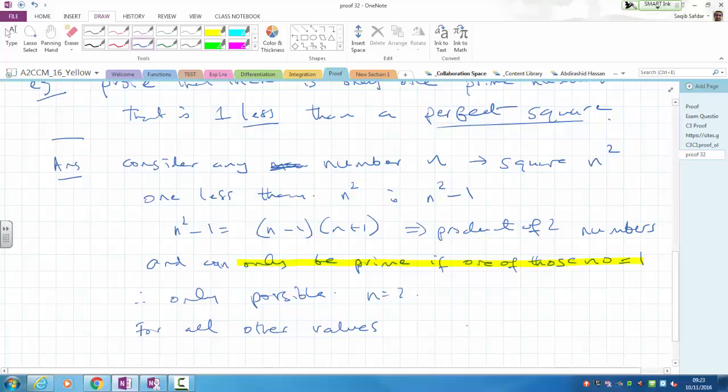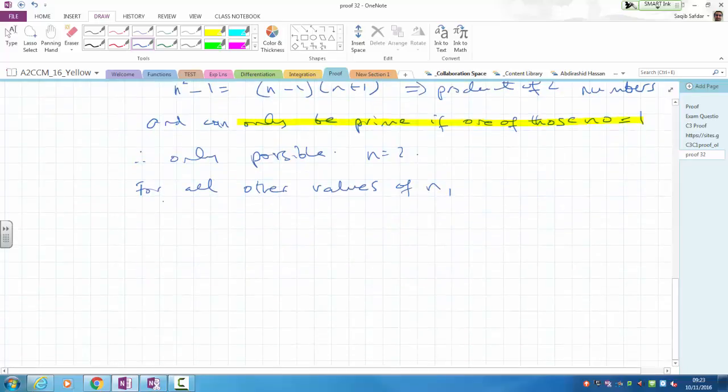So for all other values, it emphasizes that two numbers can only be prime. Because it's a product, there's your closing argument. If it's a product of two numbers, one of those numbers has to be 1 for it to be prime. And therefore you establish what n is. For all other values of n, one less than its square is a product of two numbers, and therefore not prime.